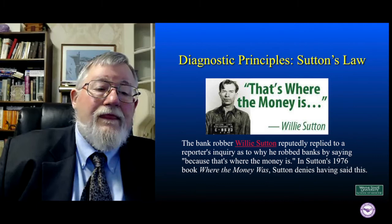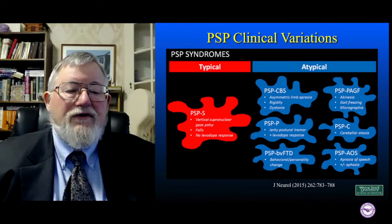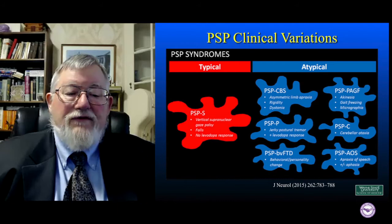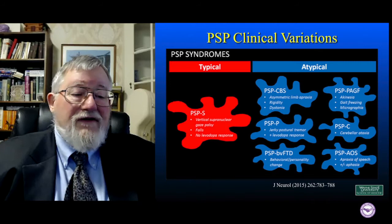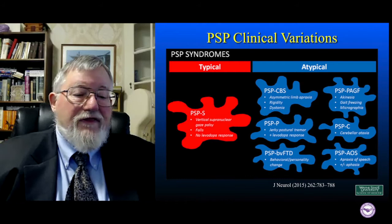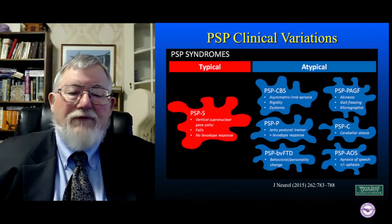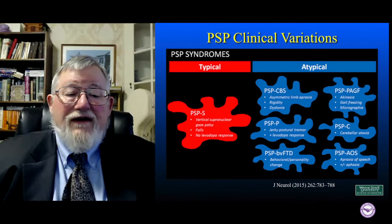Among the other Parkinsonian syndromes, progressive supranuclear palsy (PSP) is notable. The classic feature is vertical supranuclear gaze palsy, from which the disease gets its name. However, patients typically present with Parkinsonian signs and may not develop the vertical gaze palsy for several years. They do have falls and a relative lack of response to levodopa — features also common in multiple system atrophy. And one atypical variant, PSP-C, even produces cerebellar ataxia, meaning PSP can look very much like multiple system atrophy.